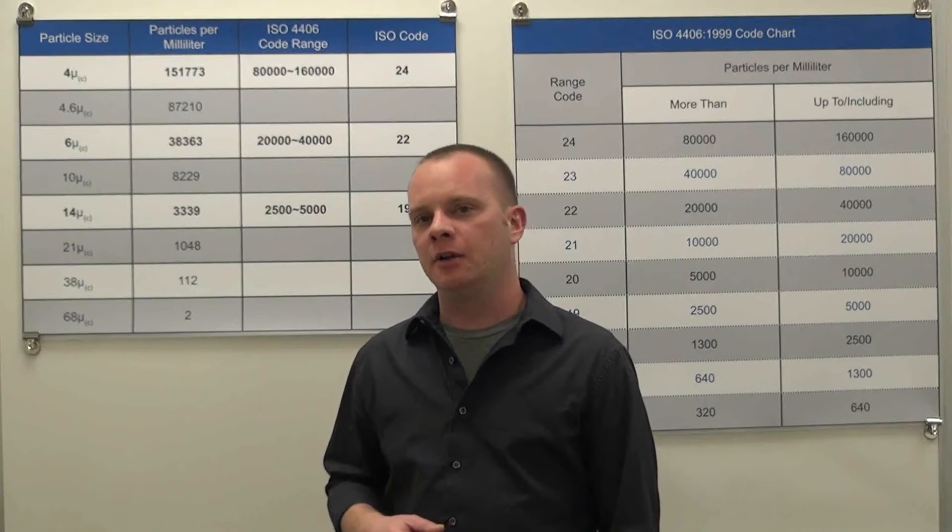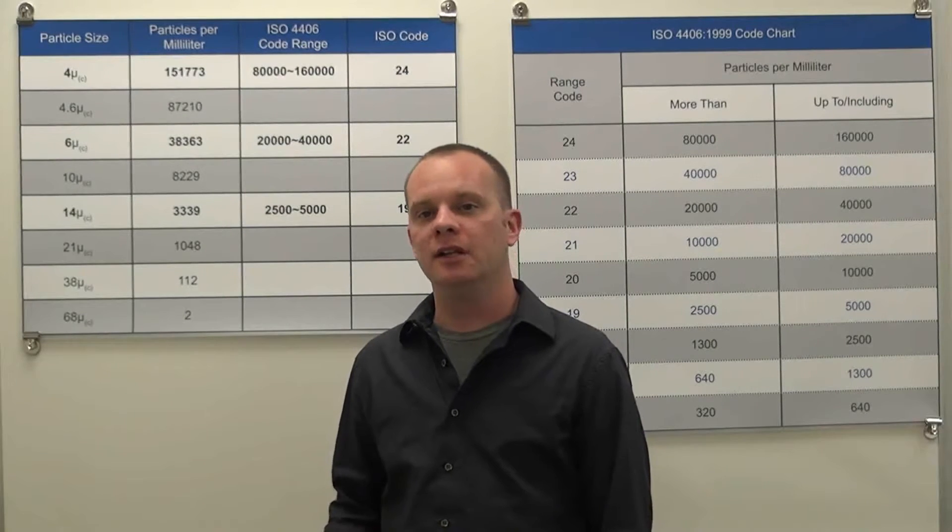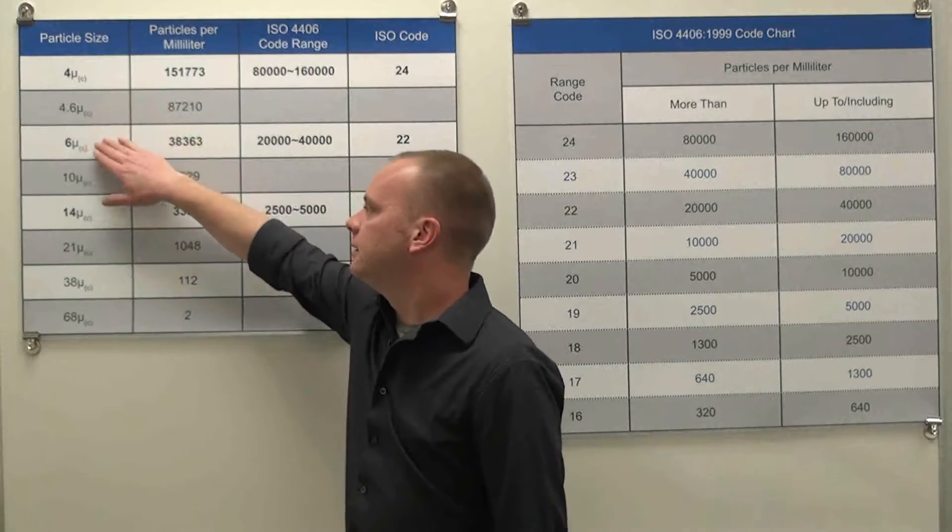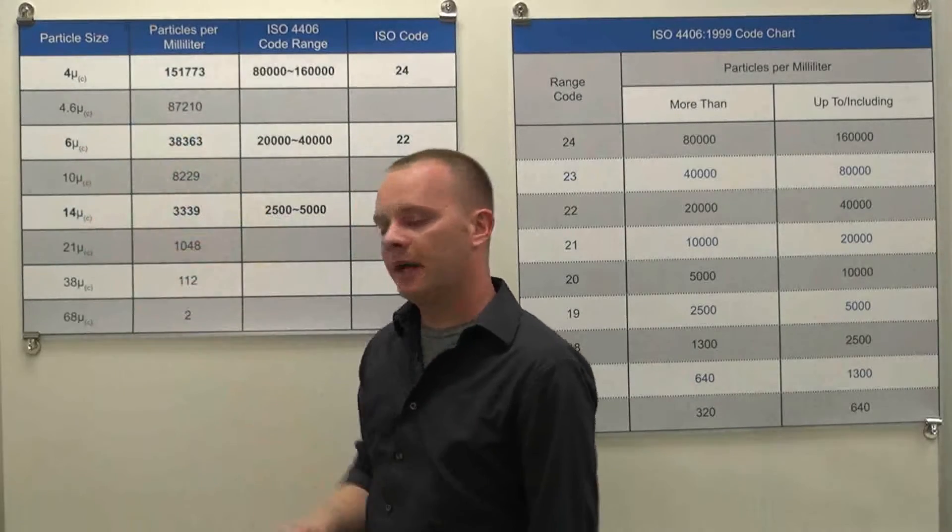ISO fluid cleanliness codes are used to quantify levels of particulate contamination present per milliliter of fluid at three different micron sizes. The three different micron sizes quantified are 4 micron, 6 micron, and 14 micron.